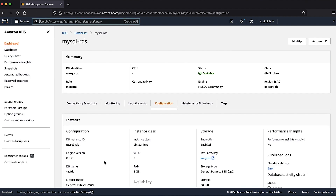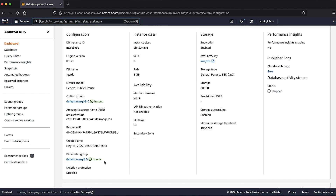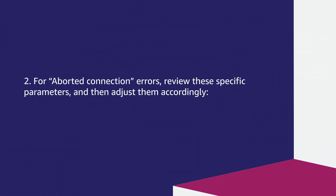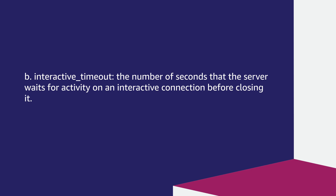One: review your RDS for MySQL parameter group. If you are using a default parameter group, then it is likely the default settings aren't adequate for your database workload. For aborted connection errors, review these specific parameters and adjust them accordingly. Connect timeout: the number of seconds that the MySQL D server waits for the connect packet before sending back that handshake. Interactive timeout: the number of seconds that the server waits for activity on an interactive connection before closing it.